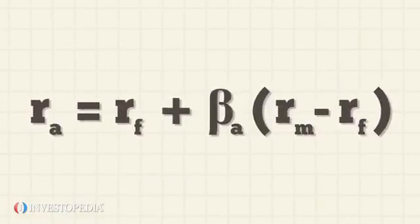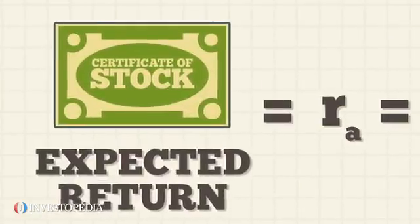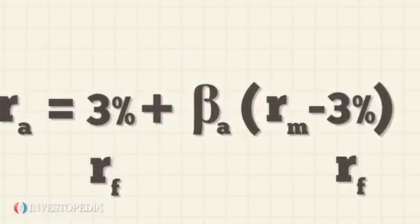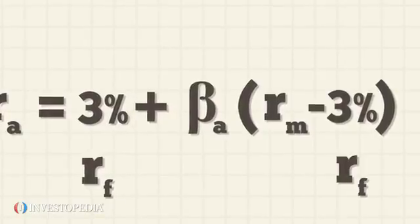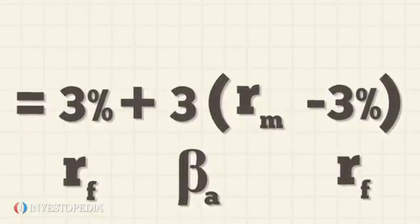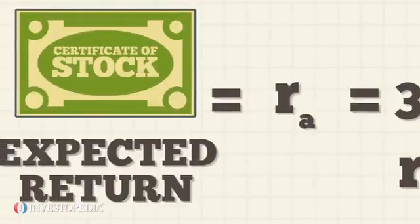For example, the expected return of a stock can be figured out in the following way using the model. If the risk-free rate is 3%, the beta, or risk measure, of the stock is 3, and the expected market return over the period is 11%, the stock is expected to return 27%.